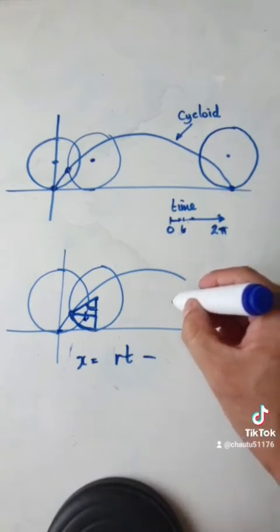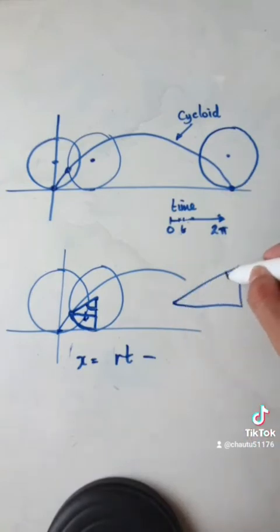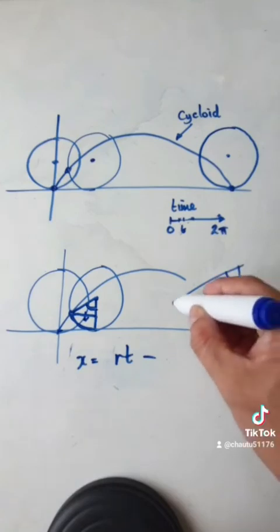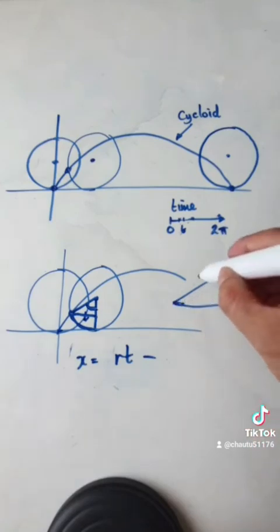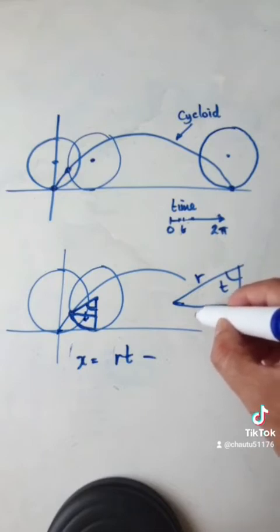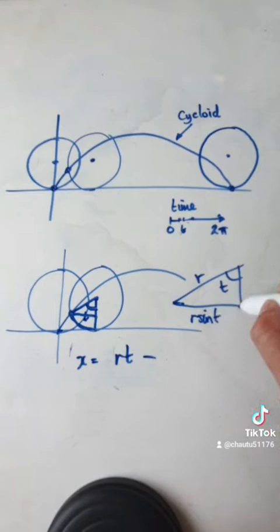So you've got a triangle here with angle t. This length here is given by, remember, our circle is of radius r. So this length here would be r sine t.